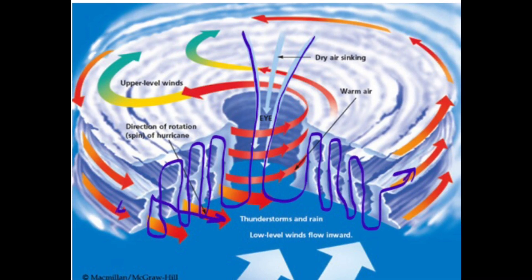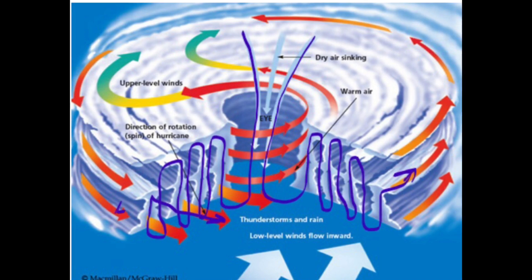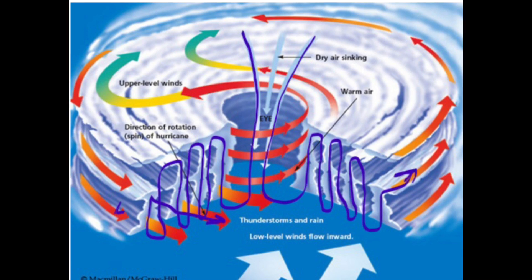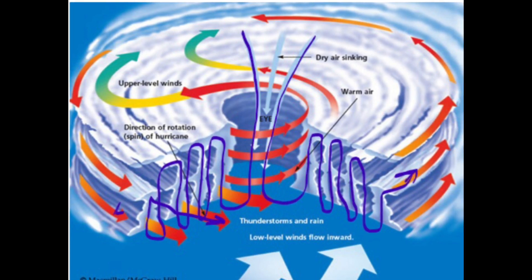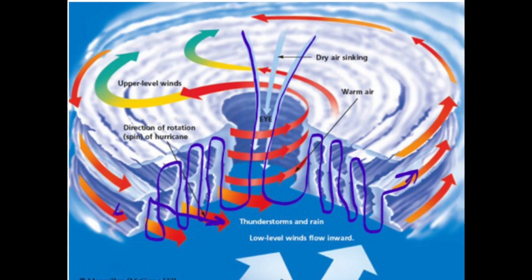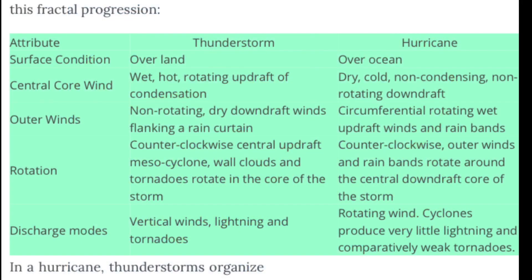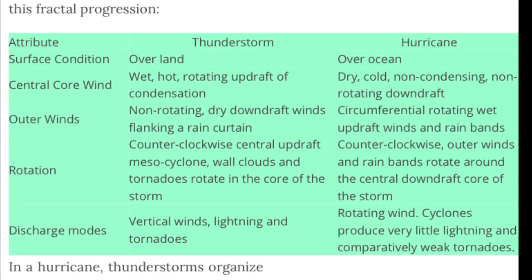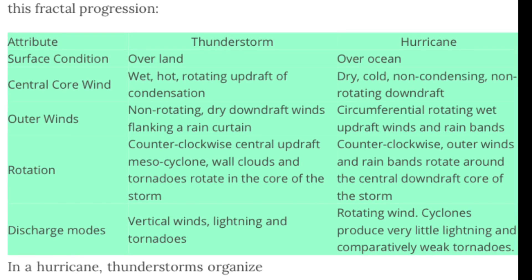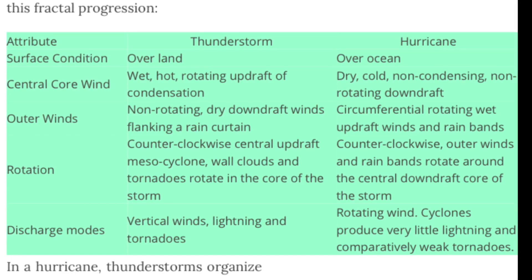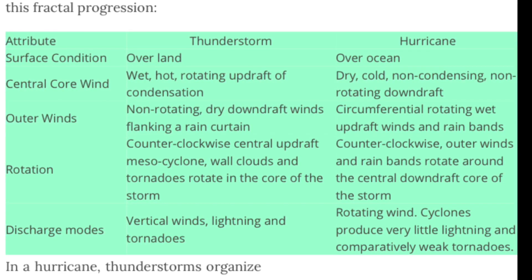In fact, thunderstorm cells interact as looped currents all the time, even when not part of a larger cyclonic system. One storm cell can arch its anvil cloud over another and suck the life out of it by absorbing its energy. One can witness this as a squall line of thunderstorms develops. Comparing the characteristics of thunderstorms and hurricanes in the northern hemisphere shows the similarities and polar opposite characteristics that naturally develop in this fractal progression.